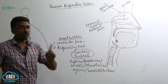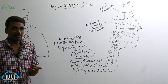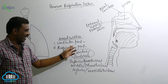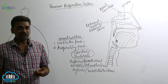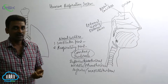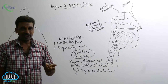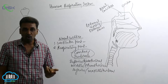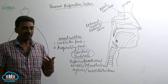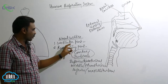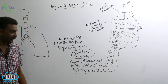The conchae are covered by pseudostratified epithelium and they act like air conditioners — air is humidified, moistened, softened, and filtered. This process occurs in the respiratory part.